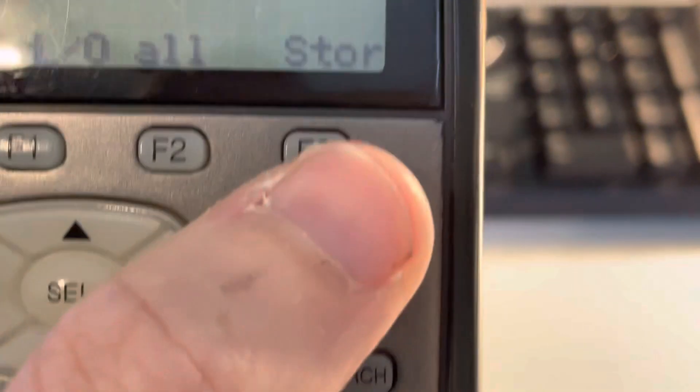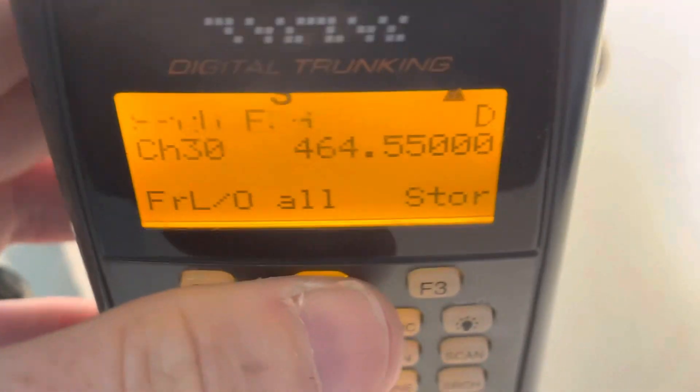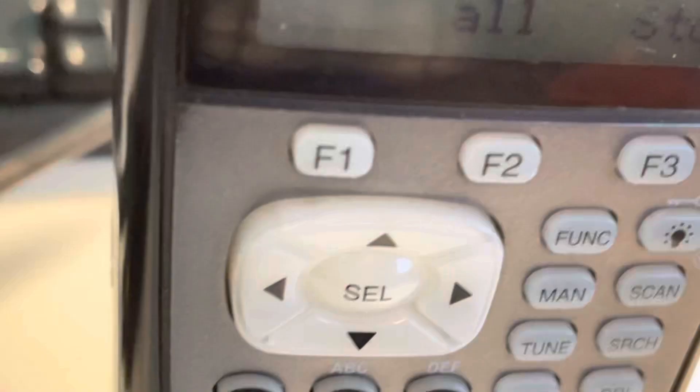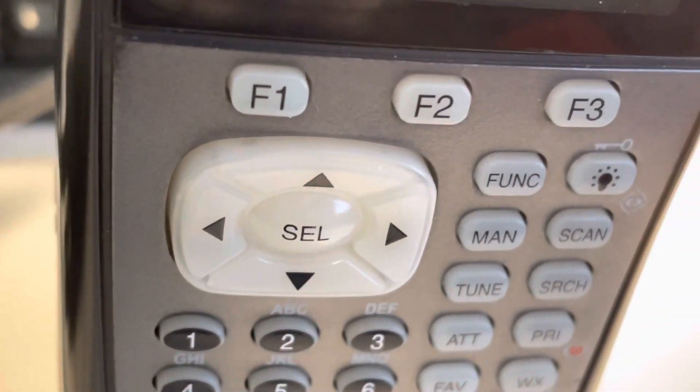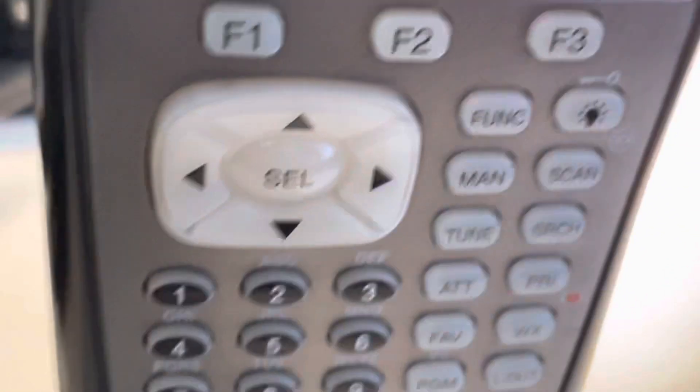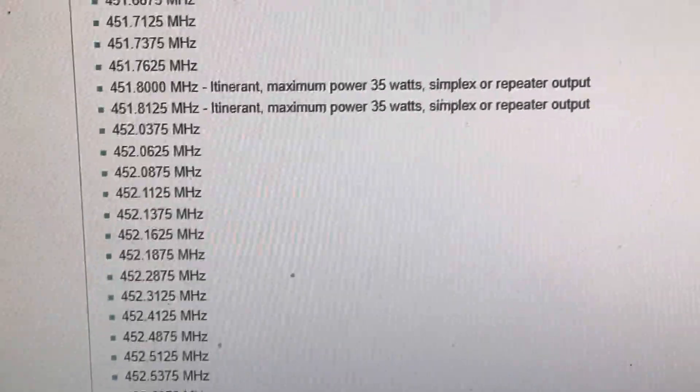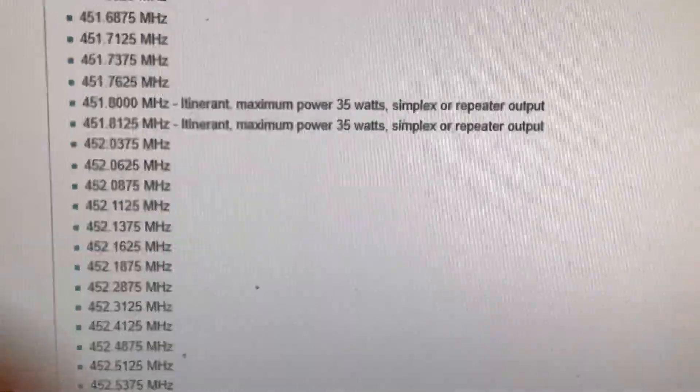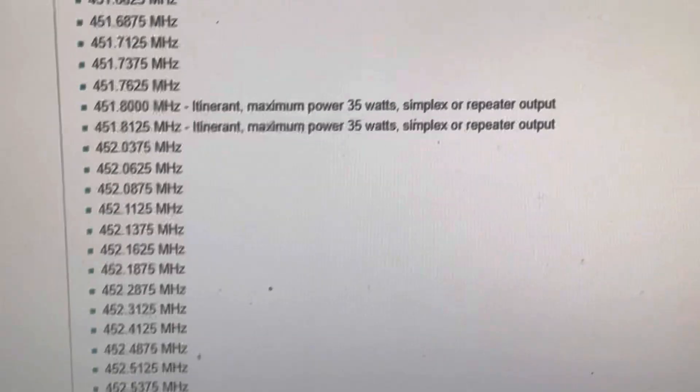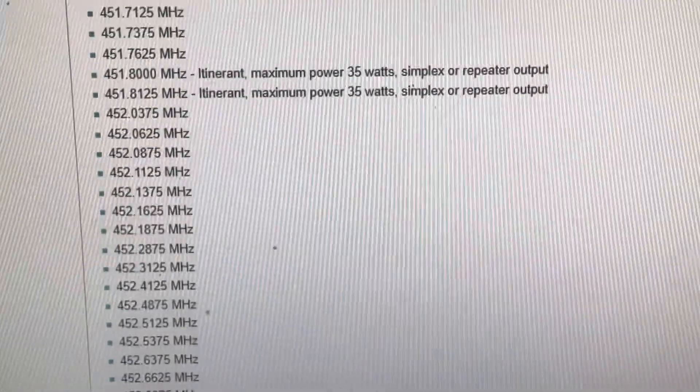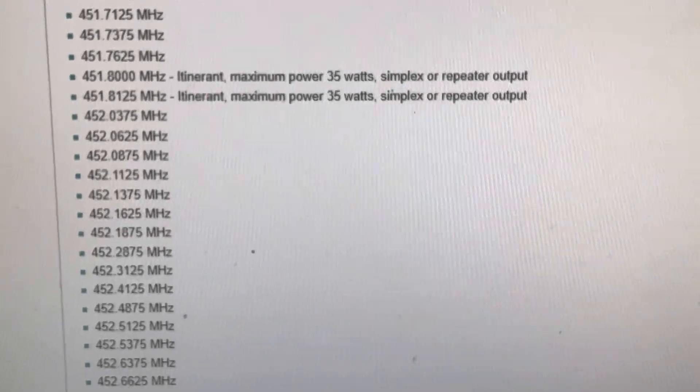The thing that makes these frequencies unique, compared to the other ones - what I'm going to do is pull up a list here. There are a couple frequencies in the UHF band and the VHF bands, VHF high and VHF low, that actually allow you to use them, their itinerant frequencies, and you can use them for simplex or you can use them for a temporary repeater or a portable repeater.